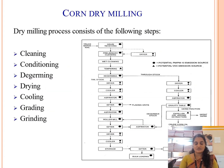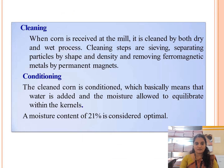The dry milling process consists of the following steps: cleaning, conditioning, de-germing, drying and cooling, grading, and the grinding process. Let's look at each different process.